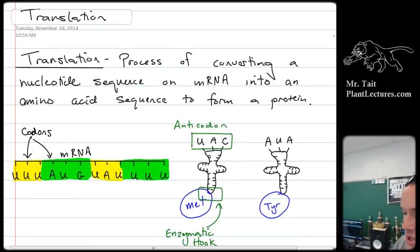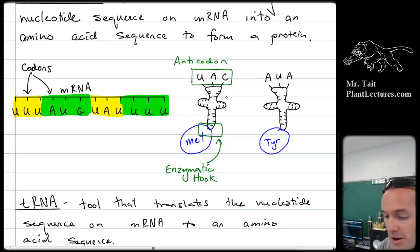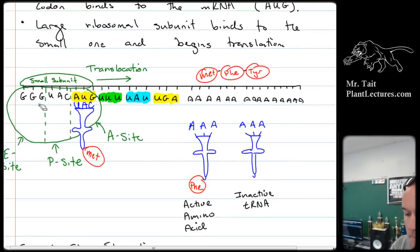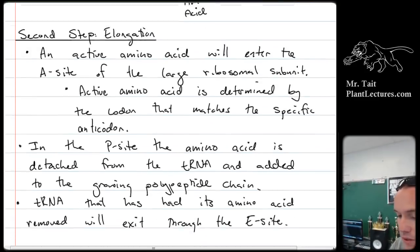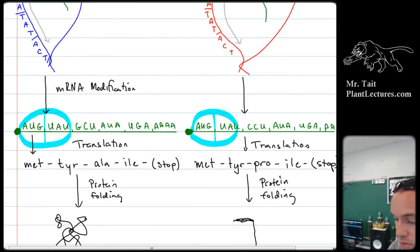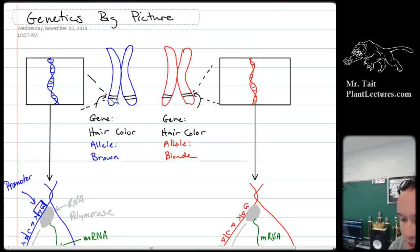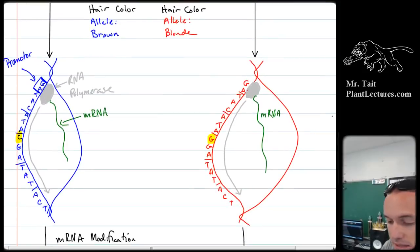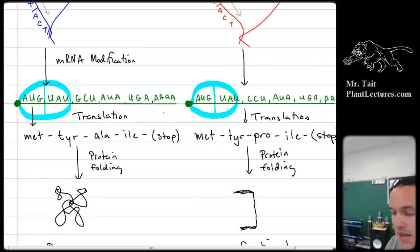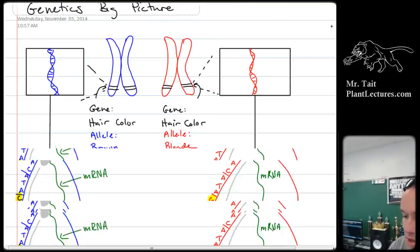Translation is where mRNA is made into a protein. It happens using anticodons on tRNA. There are codons on the mRNA, and they match up with anticodons on the tRNA, and then ribosomes bond those amino acids together into a polypeptide chain, which gets folded and made into a protein. An allele represents a strand of DNA corresponding to a promoter and then a gene. RNA polymerase attaches and makes mRNA. That mRNA gets modified and made into a protein, and the protein is what actually causes the trait.